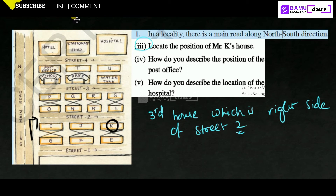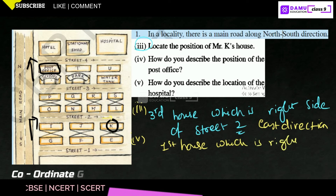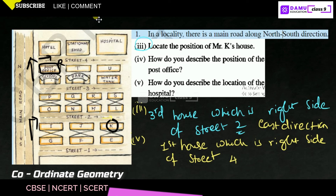Next: how do you describe the position of the post office? This is the post office. Going in this direction — in street 4, the post office is the first building on the right side, going in the east direction. We are going always in the east direction only.